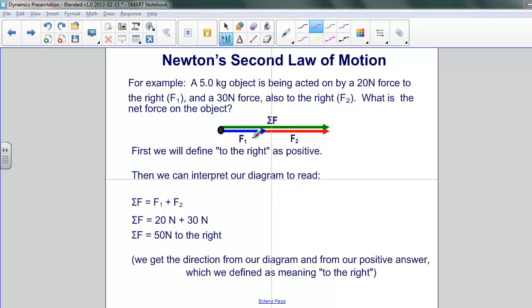So to do our addition of force 1 and force 2, we're going to define right as positive. So if we do that, we can interpret our diagram. The net force is the sum of the two, i.e., force 1 plus force 2. Both of them are positive, both pointing to the right, and they are 20 newtons and 30 newtons respectively. So when we add them, we'll get 50 newtons pointing to the right.